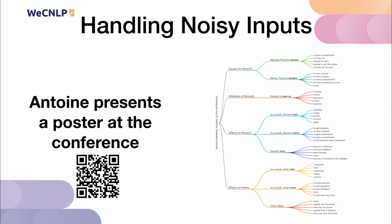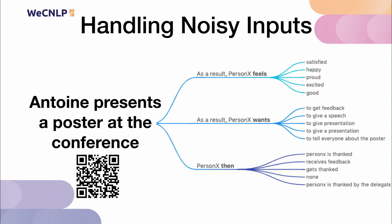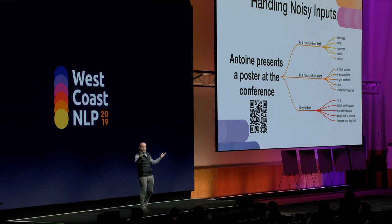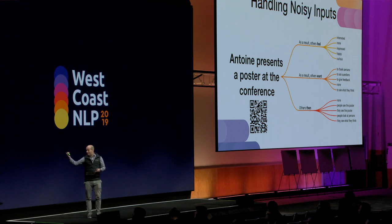The second cool property of Comet is that even though it might only be trained on a particular schema for knowledge graph training examples, it can actually generalize to a far wider range of cases. For example, for 'Antoine presents a poster at the conference,' it might produce knowledge graph extensions such as: because Antoine wanted to give a presentation or show off; I might be seen as creative, generous, or smart; as a result, I might feel satisfied and proud; I might want to get feedback or give a speech; at the end, I might be thanked and receive feedback. Meanwhile, the rest of you might be very interested or impressed, want to thank me and ask questions, and others might then want to see the poster — which I hope you do later on today.